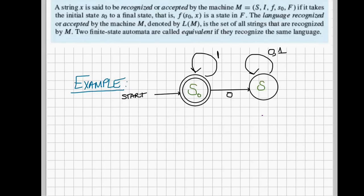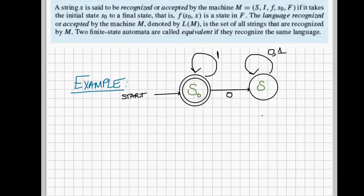The input language, the input symbols are 0 and 1. I have two states, state S0 and S1. And let's see what happens here.